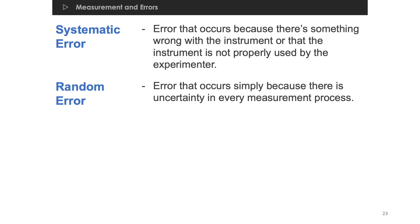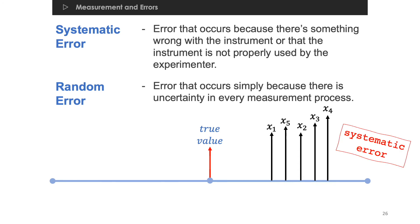In order to avoid confusion between the two types of errors, consider a measurement where a true value is known. However, when you perform multiple trial measurements, the experimental values are always higher than the true value. In this case, there occurs a systematic error during measurement.